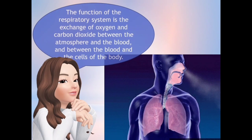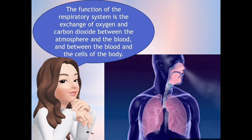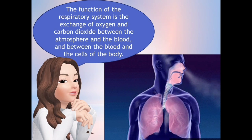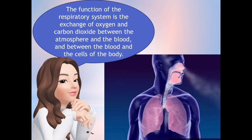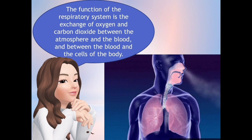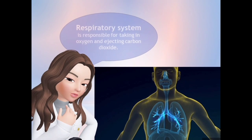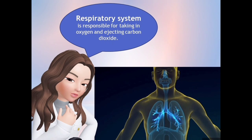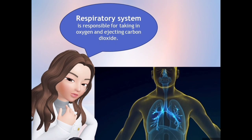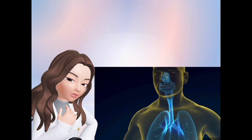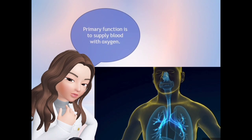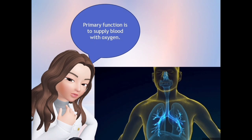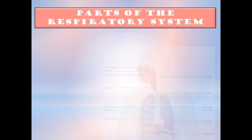The function of the respiratory system is the exchange of oxygen and carbon dioxide between the atmosphere and the blood, and between the blood and the cells of the body. The respiratory system is responsible for taking in oxygen and ejecting carbon dioxide, and its primary function is to supply blood with oxygen.